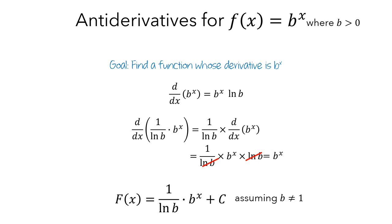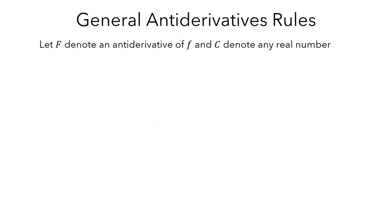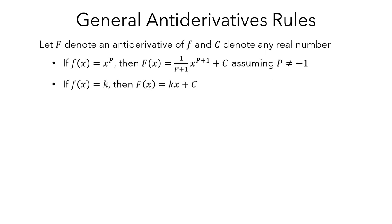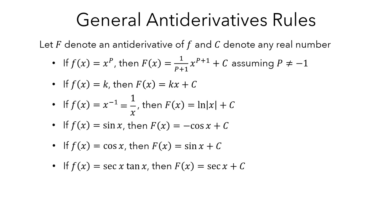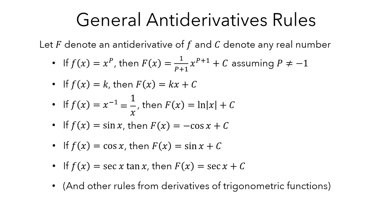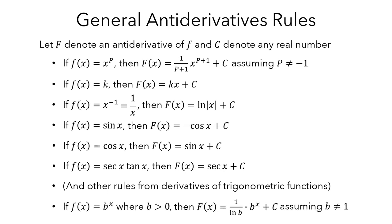Let's look back at what we've figured out. If capital F is an antiderivative of little f and c is a real number, we already knew how to compute antiderivatives of power and constant functions. Now we have a rule for 1 over x, rules for sine, cosine, and secant tangent, other rules from the trig table, and a rule for antiderivatives of exponential functions.